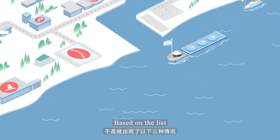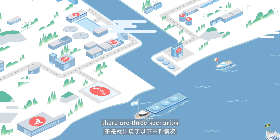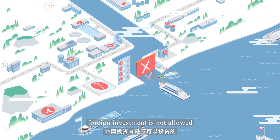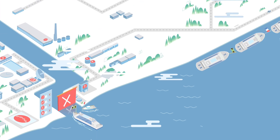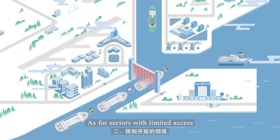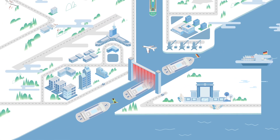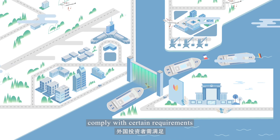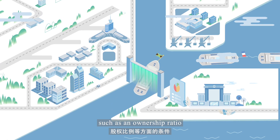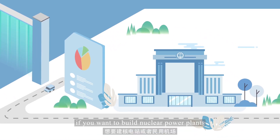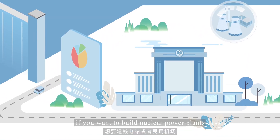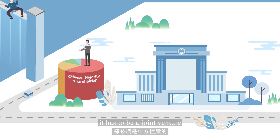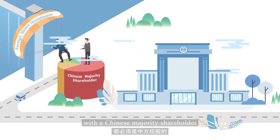Based on the list, there are three scenarios. In sectors with no access, foreign investment is not allowed. As for sectors with limited access, foreign investors have to comply with certain requirements, such as an ownership ratio. For example, if you want to build nuclear power plants or civil airports, it has to be a joint venture with a Chinese majority shareholder.